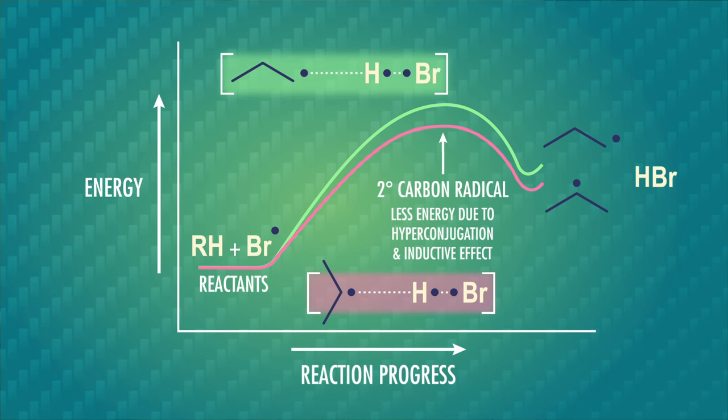In this late transition state, the secondary carbon radical has a significantly lower peak to overcome its activation energy. So much more of the secondary propyl radical forms and goes on to make the major product.